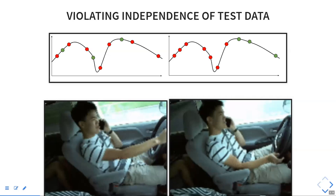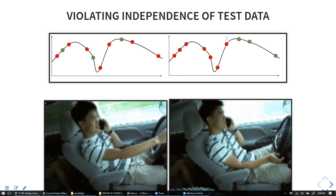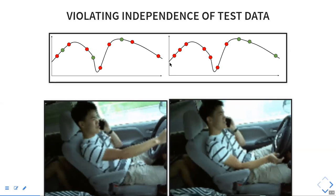There are more issues around how you split your data that can lead to problems. If you have time series data and randomly split into training and validation, it's much easier to predict points when you already know the future. Training on the past and predicting the future is the right approach, but you can get overly optimistic results if you evaluate on random past data where you've already seen future data. You have to be careful to avoid dependencies between training and evaluation data.